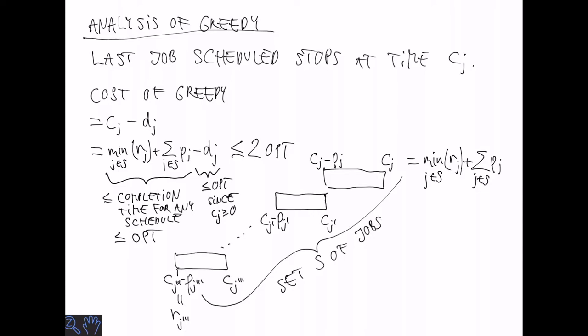Similarly, even if we complete all the jobs by time zero, we are going to get a cost that is at least minus dj for every j. And by what we saw before, the constant two is tight.